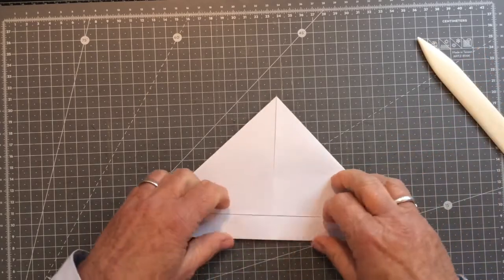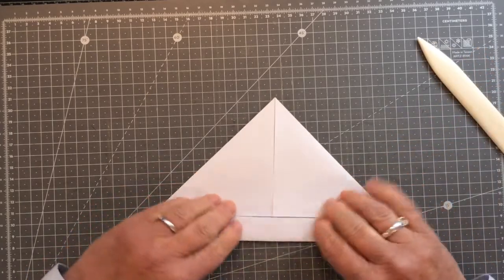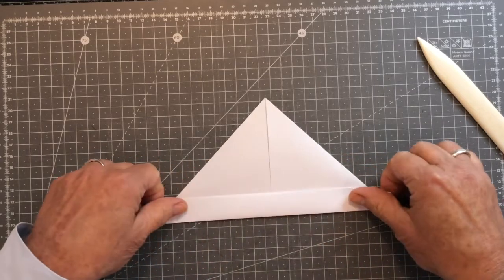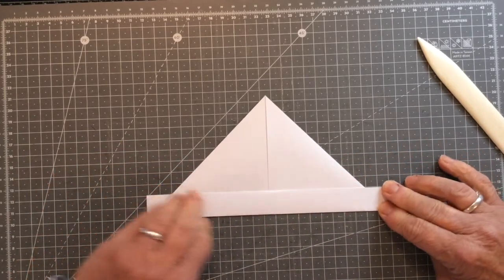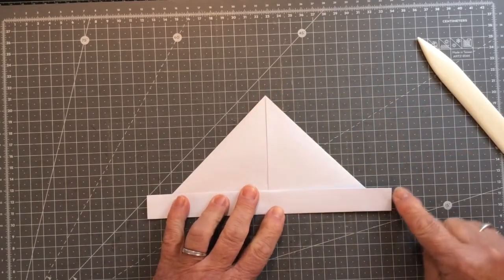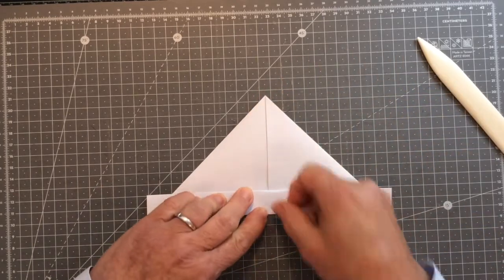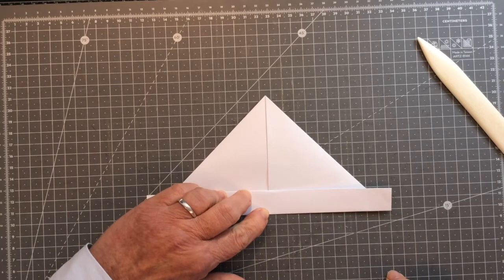All right, so what you have is two folds at the bottom there coming up and you have something resembling that. Okay, so what we want to do now is we want to take this edge and we want to fold it to the centre point.